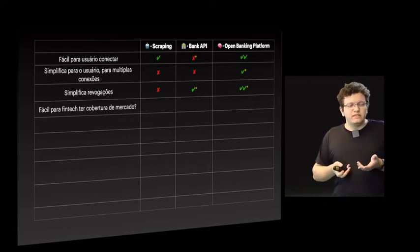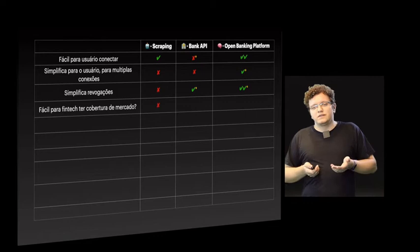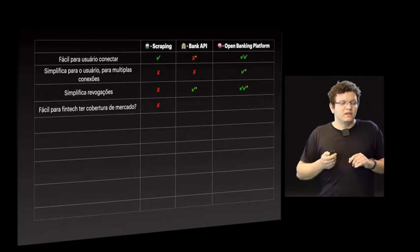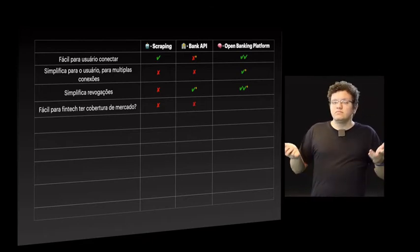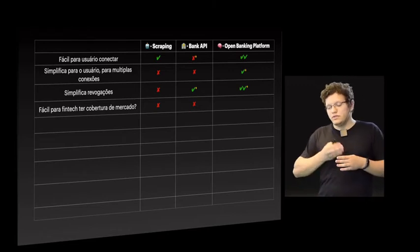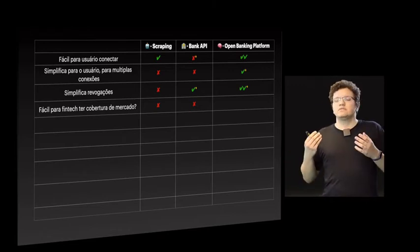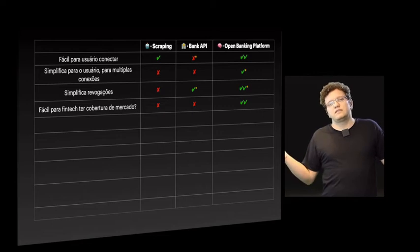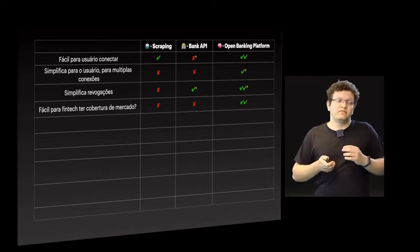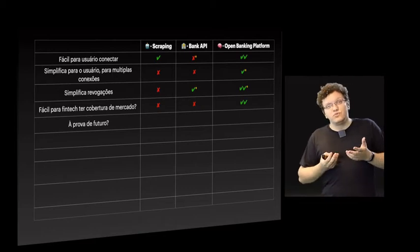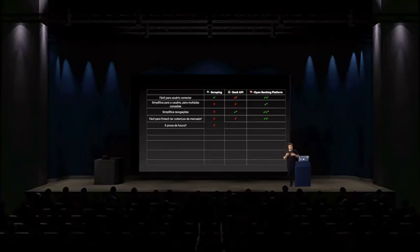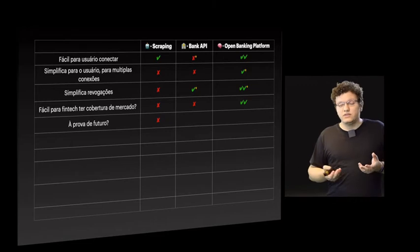É fácil para a fintech ter cobertura de mercado relevante? No scraping, é bem complicado — você vai ter que manter manualmente. Na API bancária, também difícil — você vai ter que se credenciar em cada instituição. Na plataforma, faz uma conexão e tem acesso a toda a cobertura disponível. À prova do futuro? No scraping, definitivamente não — é fácil de quebrar. Na API, difícil avançar rápido porque depende da boa vontade da instituição ou de nova regulação.